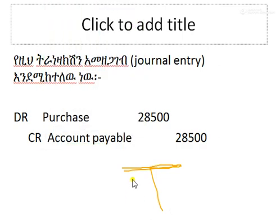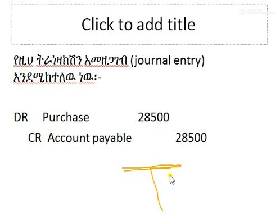The account has a debit side on the left-hand side and a credit side. This is the simplest form of account. Now, debit is on the left side, credit is on the credit side.